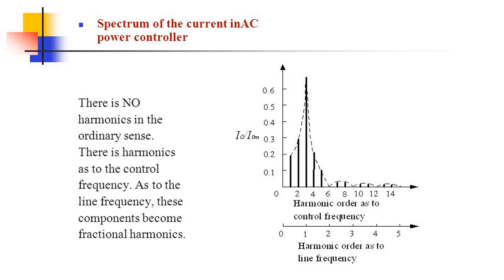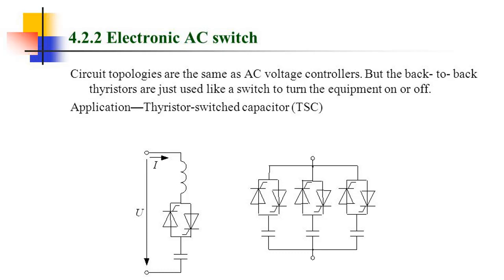4.2.2 Electronic AC Switch. Circuit topologies are the same as AC voltage controllers, but the back-to-back thyristors are just used like a switch to turn the equipment on or off. Application: thyristor-switched capacitor (TSC).